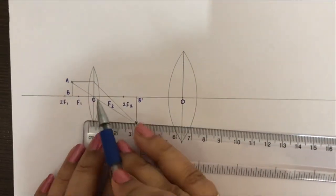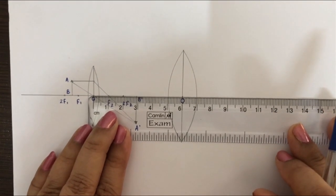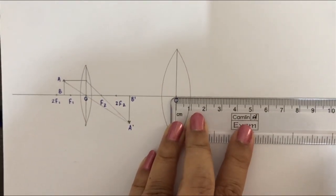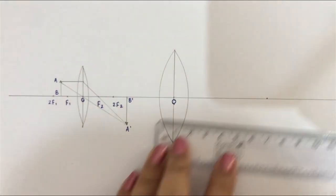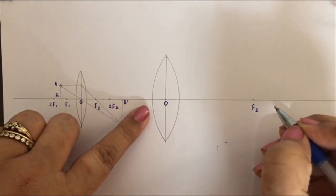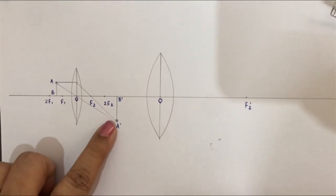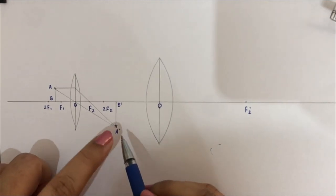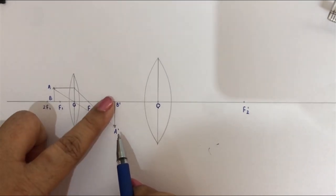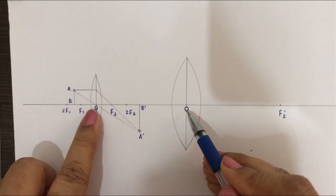Now measure the total distance between the optical center of the first lens and the optical center of the second lens — it is 6 centimeters. That same 6 centimeters we mark on the other side from the optical center. Mark 6 centimeters — this is your focus f2 of the second lens, so I'll mark it as f2-dash. I want a magnified and virtual image of A-dash B-dash, which means it should be placed between the optical center and the focus.